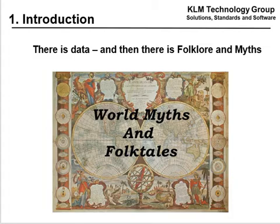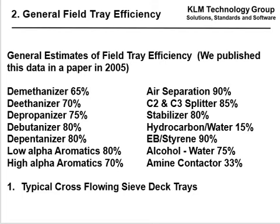There's data, and then there's folklore and myths — make sure you go back to the data. Here are some general estimates of field tray efficiency, published in a paper in 2005: Demethanizer 65%, depropanizer, debutanizer, low alpha K aromatics, high alpha K aromatics, air separation, hydrocarbon and water 15%. These are estimates for typical cross-flowing trays using SRK.